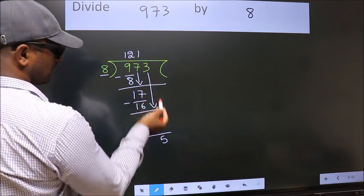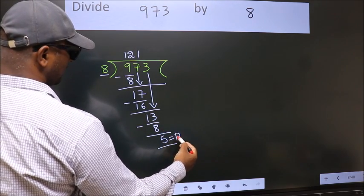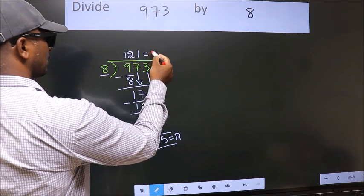No more numbers to bring it down. So, we stop here. This is our remainder. This is our quotient.